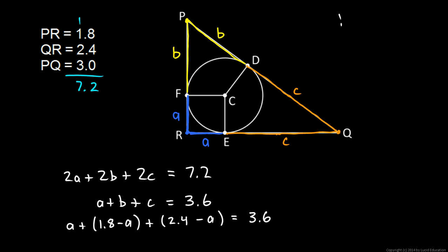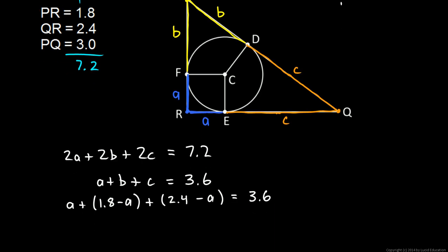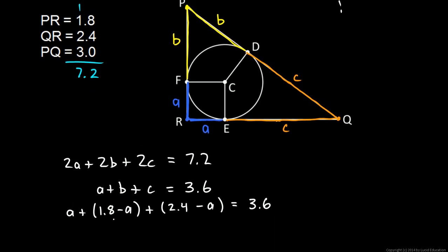So side C is 2.4 minus A. So in place of C right here, let's write 2.4 minus A. And that has to equal 3.6. Okay. Let me get a little more room. Now let's rework this. This is 1.8, or just rewrite this rearranged 1.8 plus 2.4. And then look, I have A and a minus A and a minus A. And A and minus A and minus A add up to a minus A.